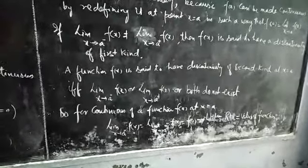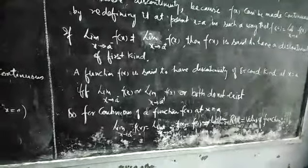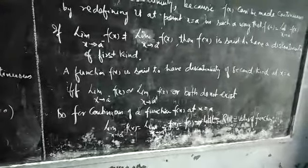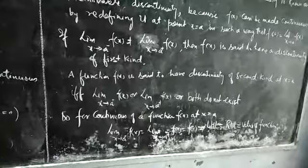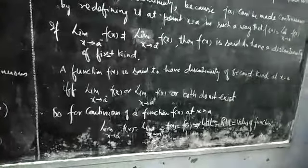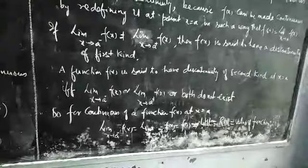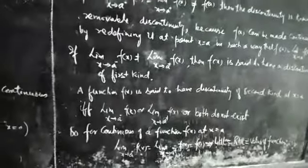So, for continuity of a function f(x) at x equal to a: limit x→a⁻ f(x) = limit x→a⁺ f(x) = f(a), that is, the left-hand limit equals the right-hand limit equals the value of the function.